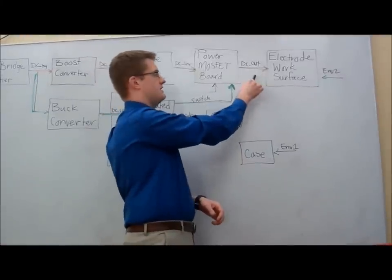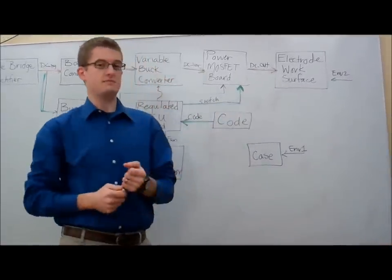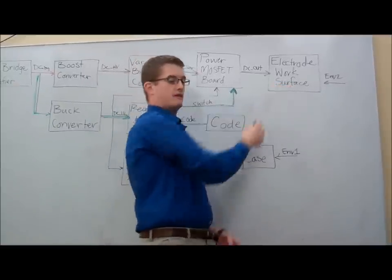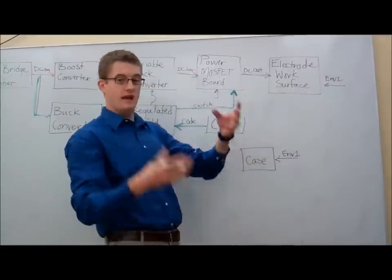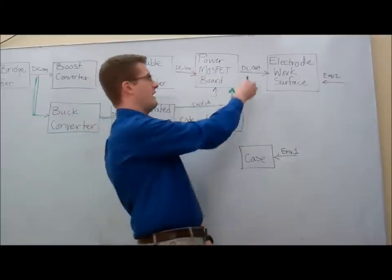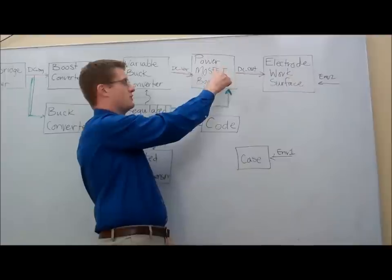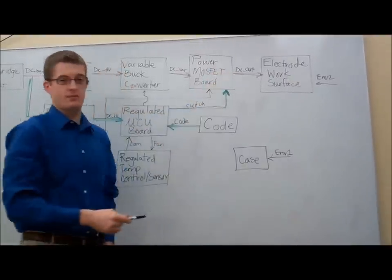Finally this DC link to the electric work surface will consist of as many lines as there are pads on the surface. For example if we have a surface made of 10 surface pads we will have 10 lines here. The lines are directly connected to an individual switching MOSFET and the power MOSFET board.